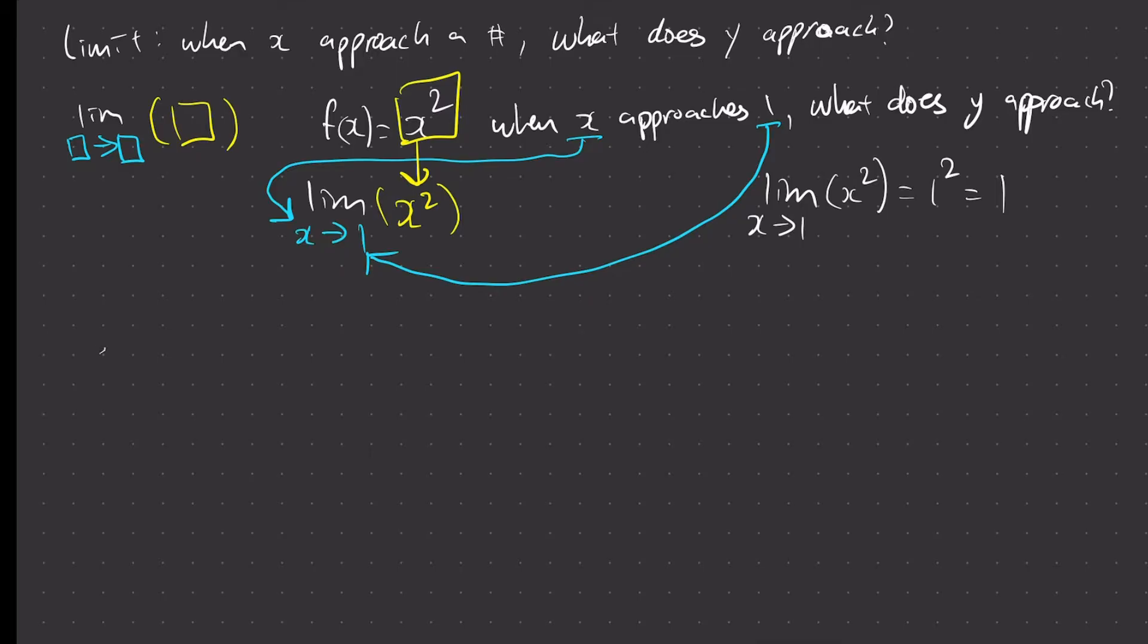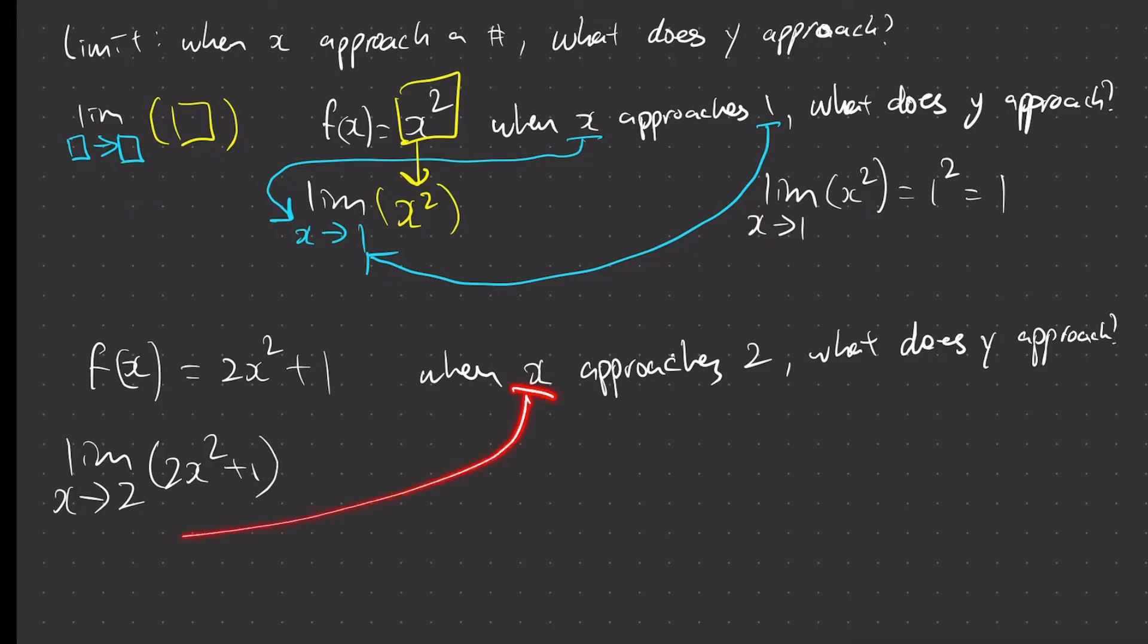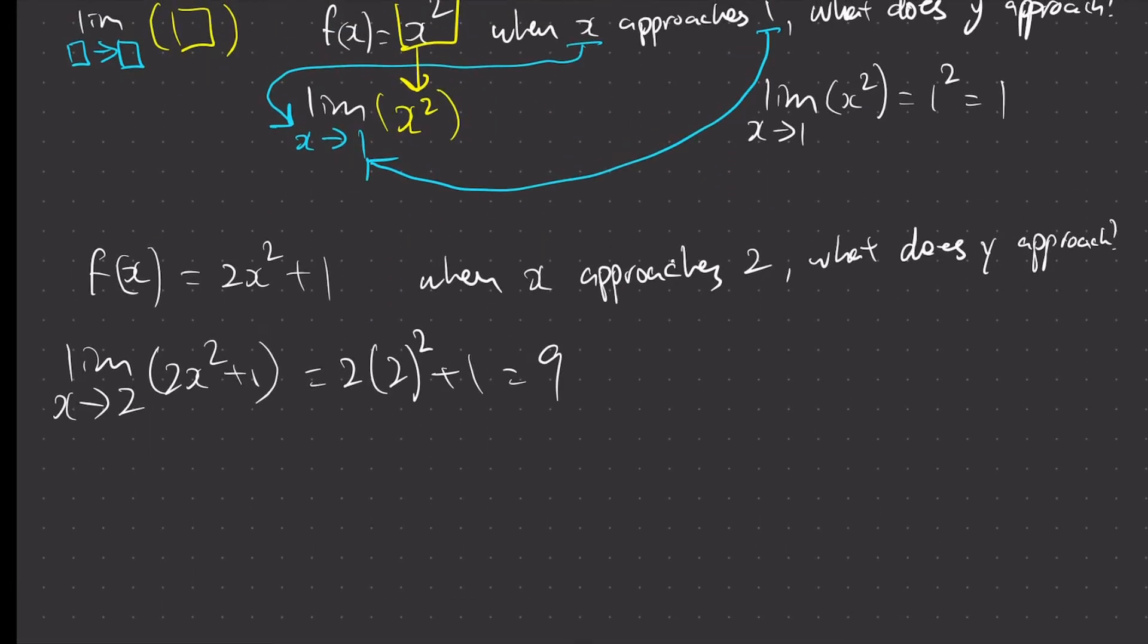Now, let's say a more complicated question. So let's say we have f(x) equals 2x squared plus 1. Again, when x approaches, let's say number 2, what does y approach? Very simple. Just no brain needed the first step. Just copy down all the numbers first. X goes here. This goes here. This goes here. And then what's next? Look at here. What to look for? X. I found my x, and then what do I sub it with? Sub it with 2. So 2, 2 squared plus 1, which is 4 times 2 is 8. 8 plus 1 is 9. Answer is 9. Just like that. Very easy.